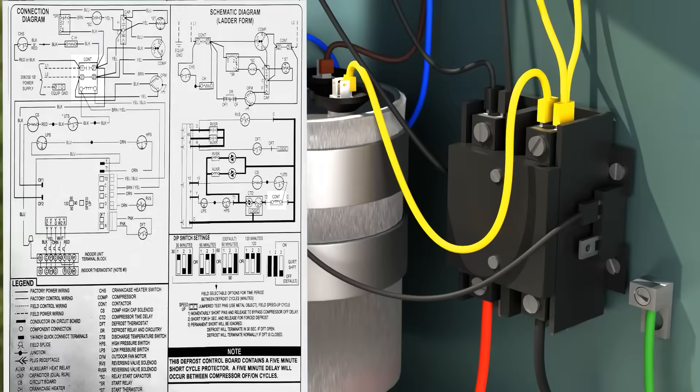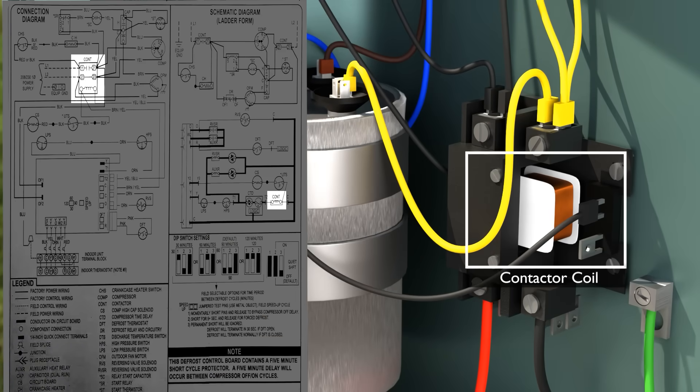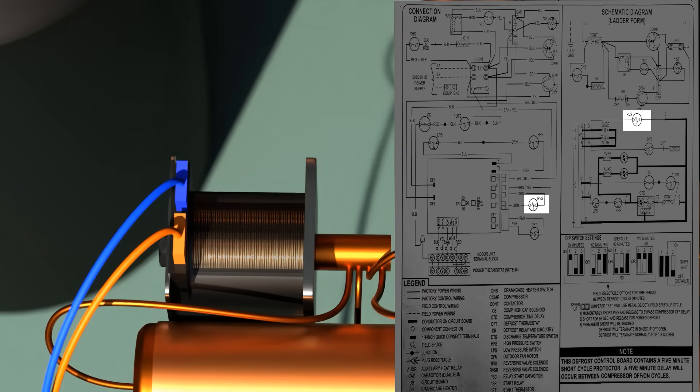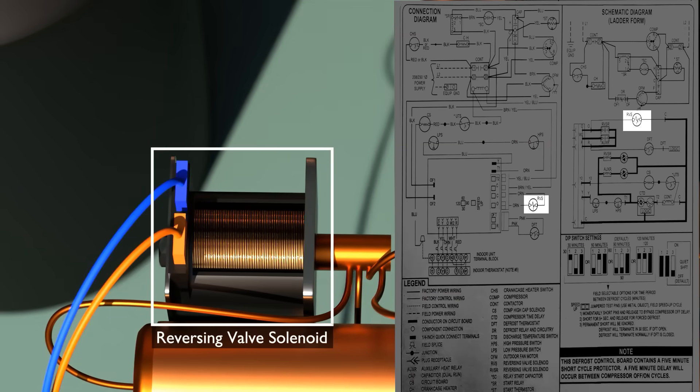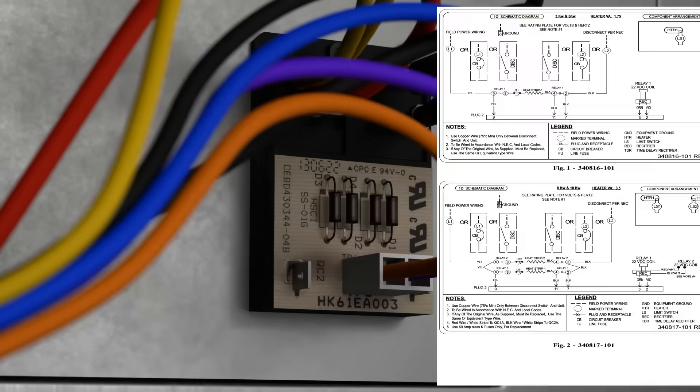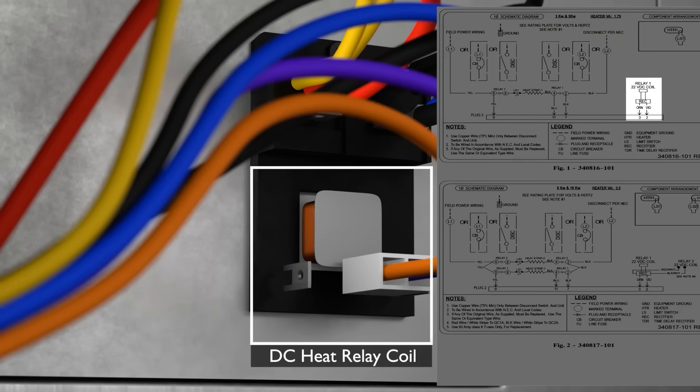Let's take a look at our contactor coil. This is inside our contactor. Our reversing valve solenoid is also an electromagnet. When it energizes, it allows the valve to shift into cooling mode. In this case, this is a DC relay for heat mode.